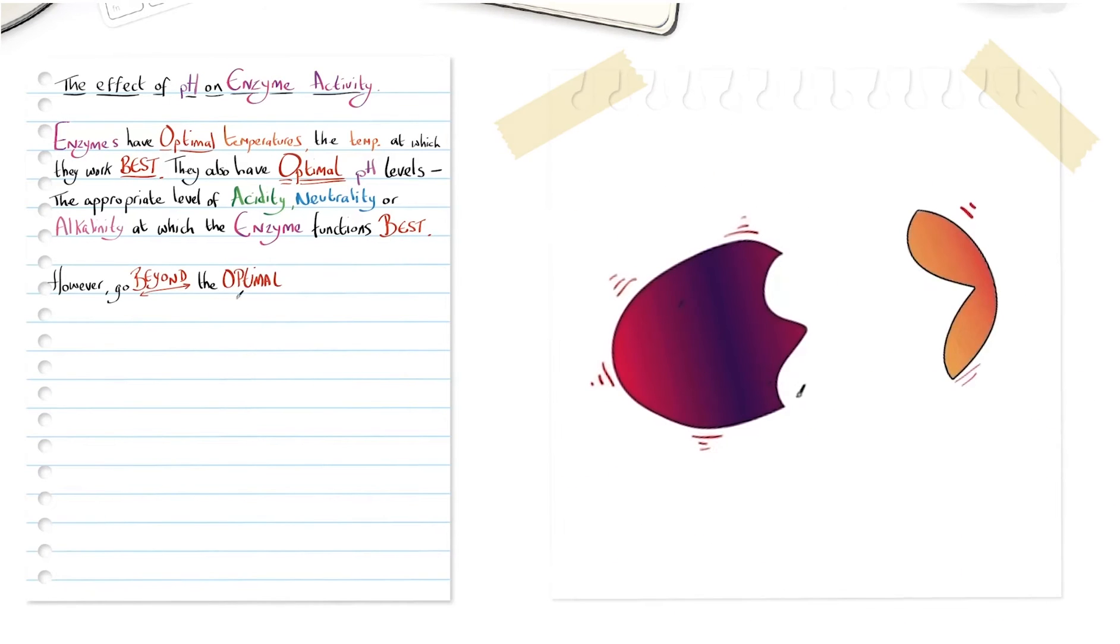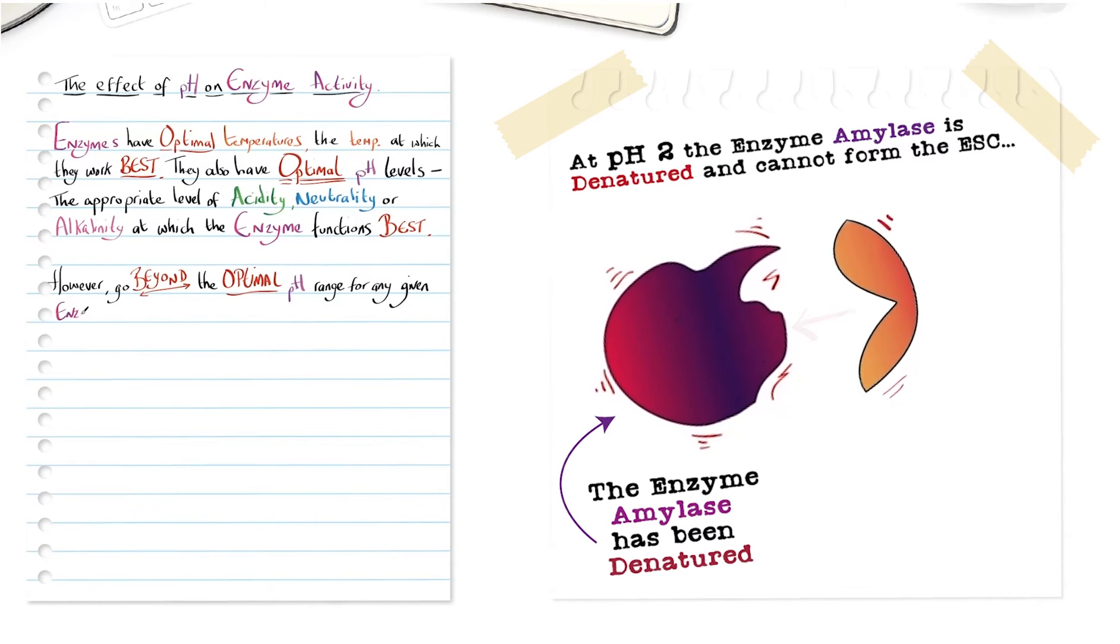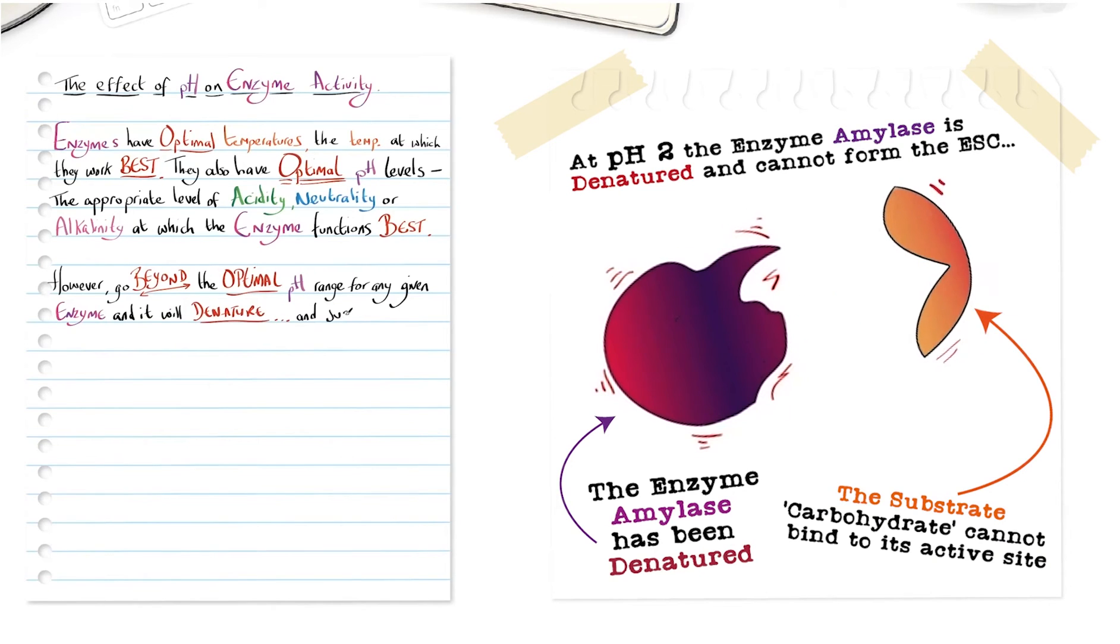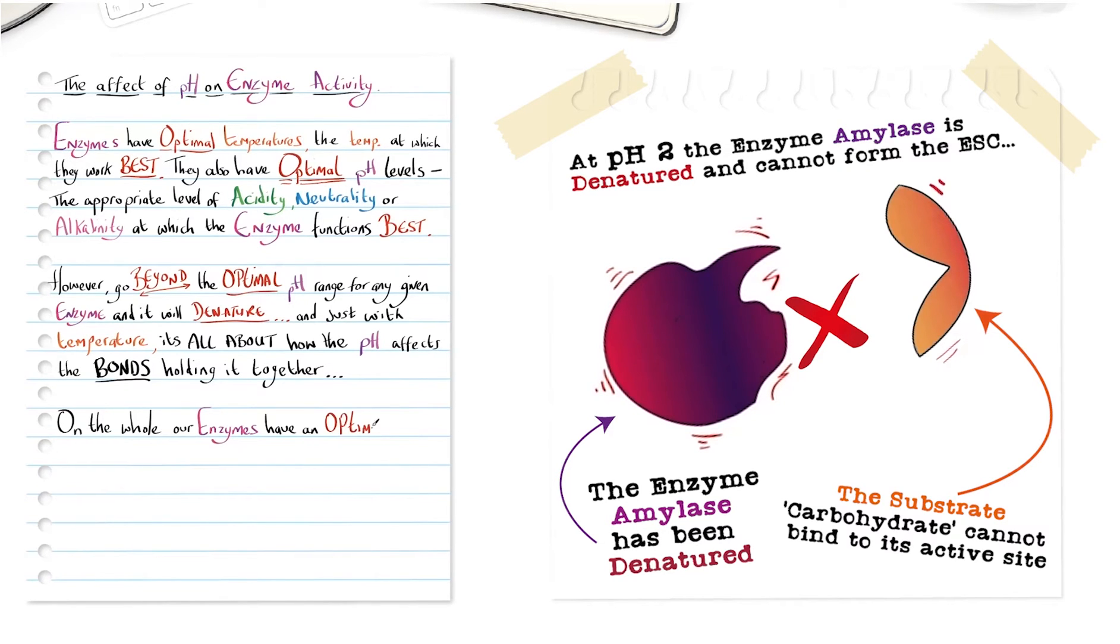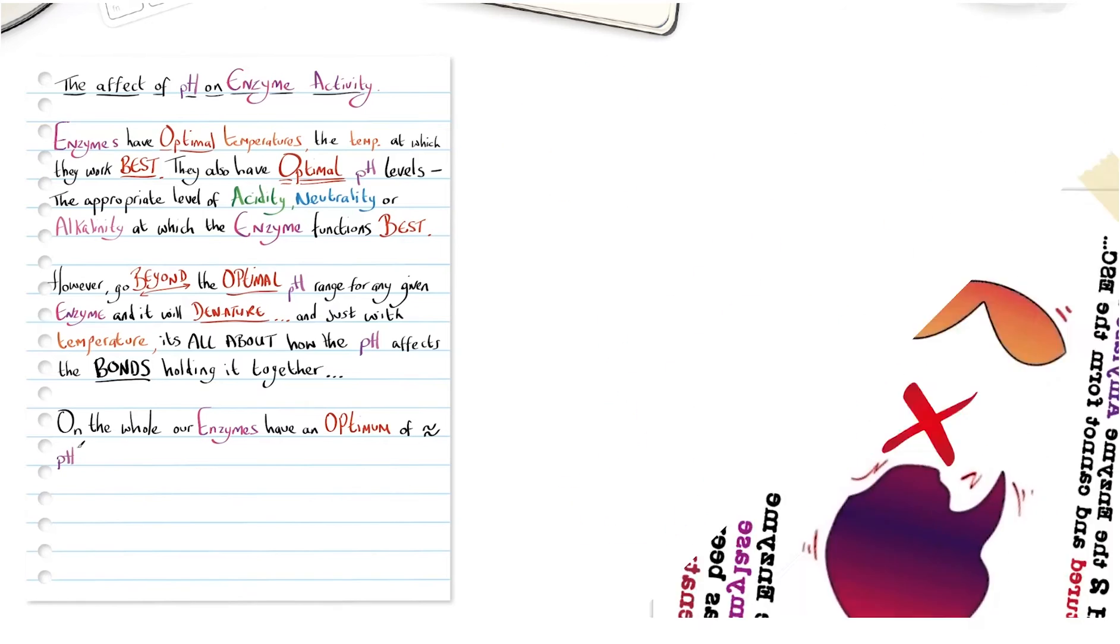However, go beyond the optimal pH range for any given enzyme and it will denature. And just as with temperature, it's all about how the pH affects the bonds holding it together. On the whole, our enzymes have an optimum of approximately pH 7 neutral.